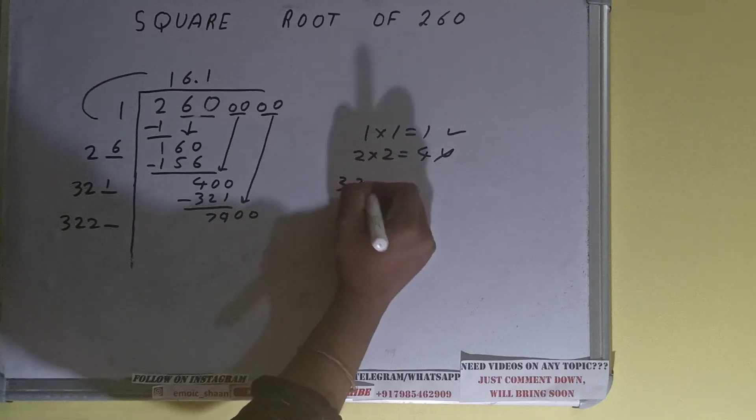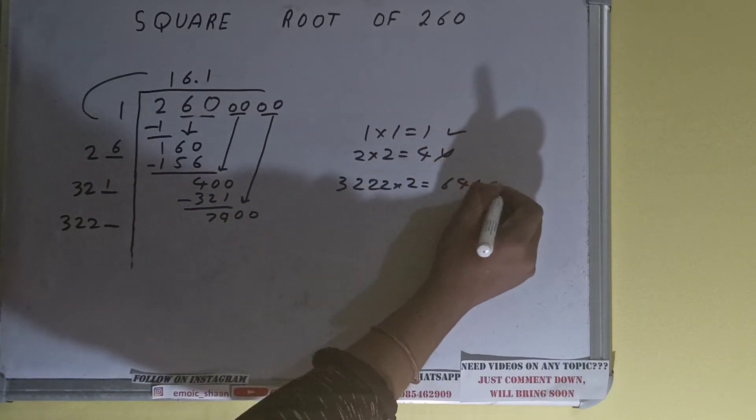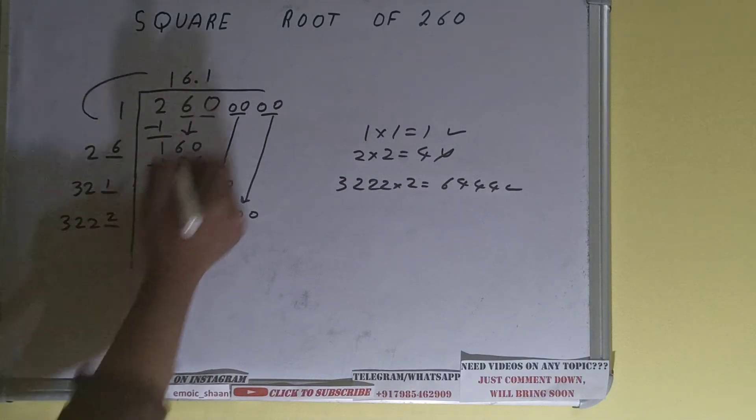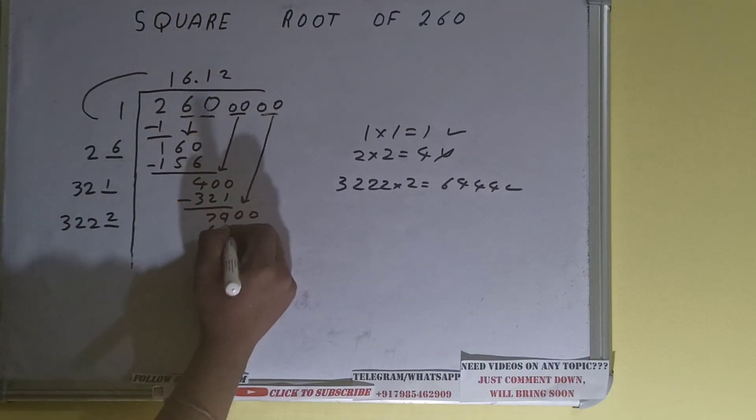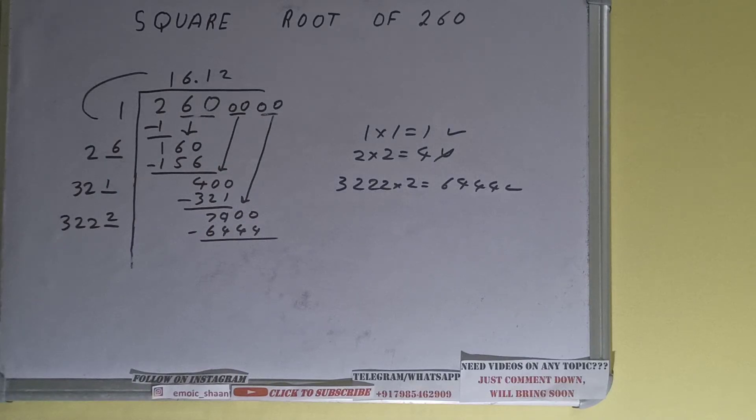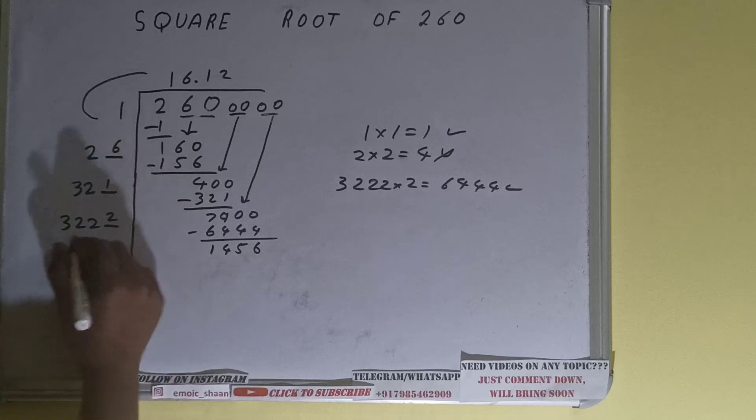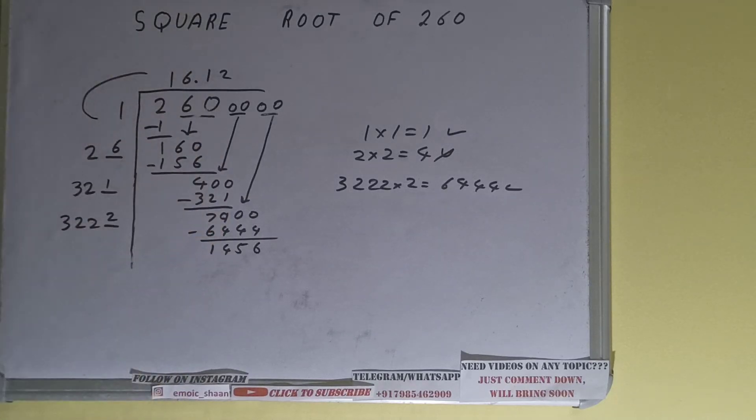3222 into 2 we can try, it will be 6444, that is good to take. So two here and two here will give 6444, subtract it and we'll be having 1456. Now 3222 into 2 we did right, so add both.